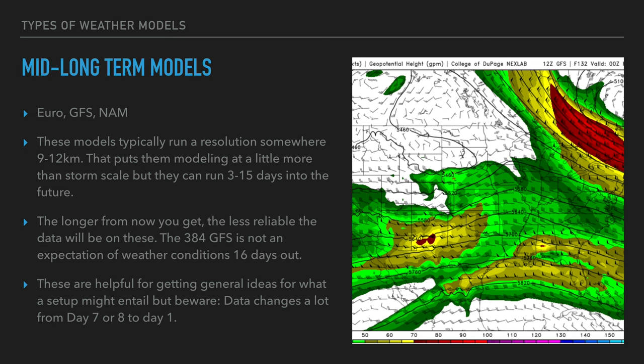If the 384-hour GFS were accurate, we'd live on an uninhabitable planet. Don't take it too seriously that far in advance. I prefer ensembles for broad strokes at that range. These operational models are helpful for getting general ideas about what a setup might entail, but data is going to change a lot from day seven to day one. Don't say this is definitely exactly how it's going to happen.